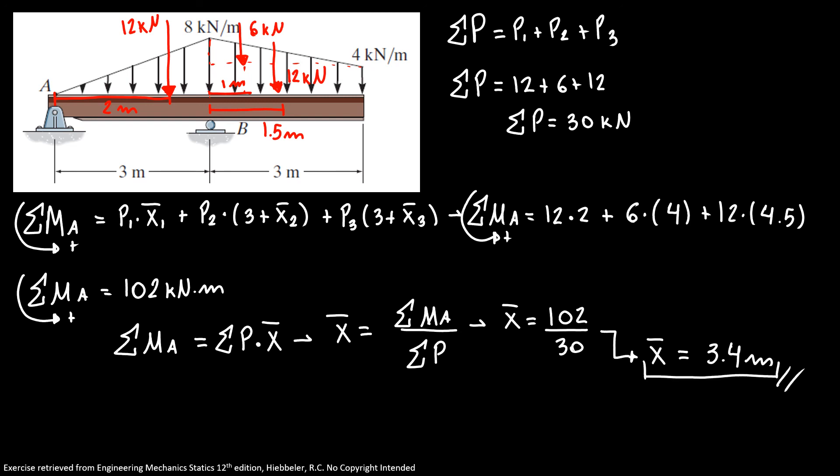So our final answers: the resultant force is 30 kN, the total moment is 102 kN·m, and the location is 3.4 meters from point A. Thanks for watching this video. Don't forget to like and share with your classmates. Thank you.